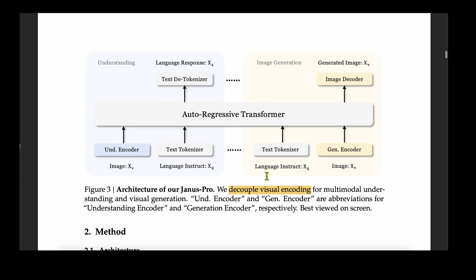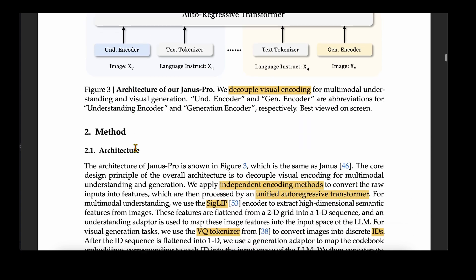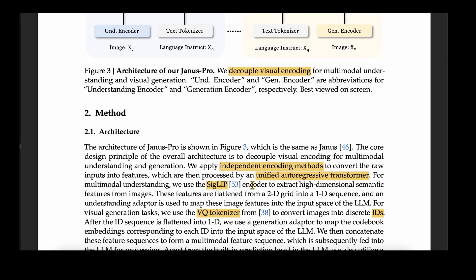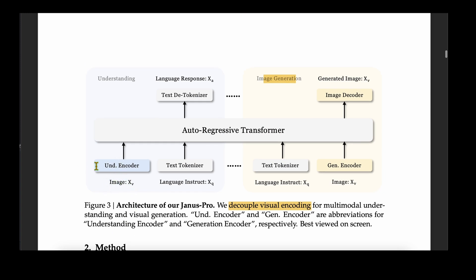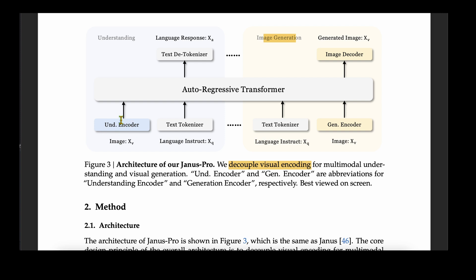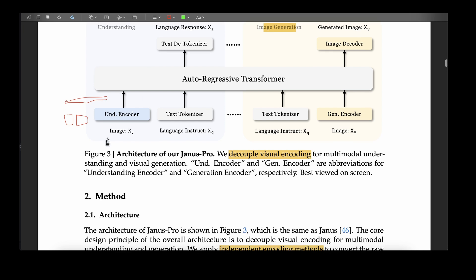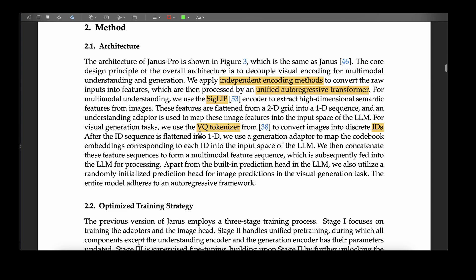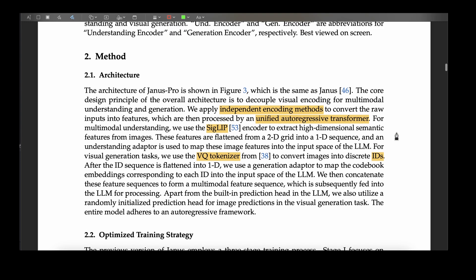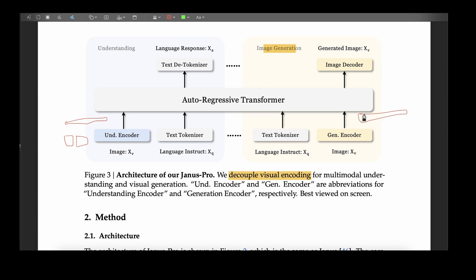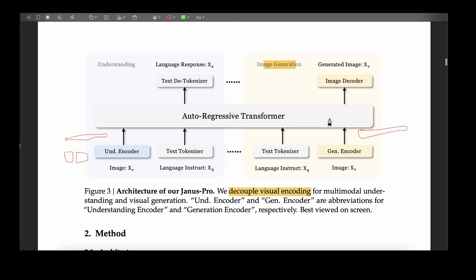Looking at the Janus Pro architecture, the main contribution is decoupling visual encoding — there's a separate encoder for the understanding task and a separate encoder for the generation task. For the understanding task, they use the SigLIP encoder to extract high-dimensional semantic features from images. The 2D SigLIP output is converted into 1D vectors and passed into the LLM. For image generation, they use a VQ tokenizer to convert images into discrete IDs, which are flattened into 1D representations and fed into the autoregressive transformer.